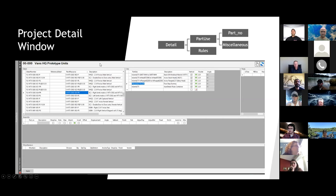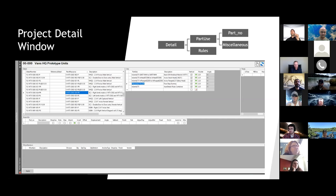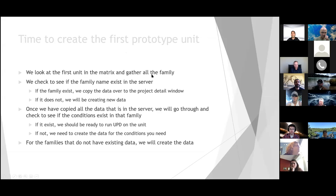Every detail has a use, and every use has an assembly table with the part number and miscellaneous. We tie all of the metal and miscellaneous parts to this specific family. That's why it's important for us to know what family we are working with in what detail — because the family name is the key thing to tie data from Revit to AutoCAD when we do our metal takeoff.